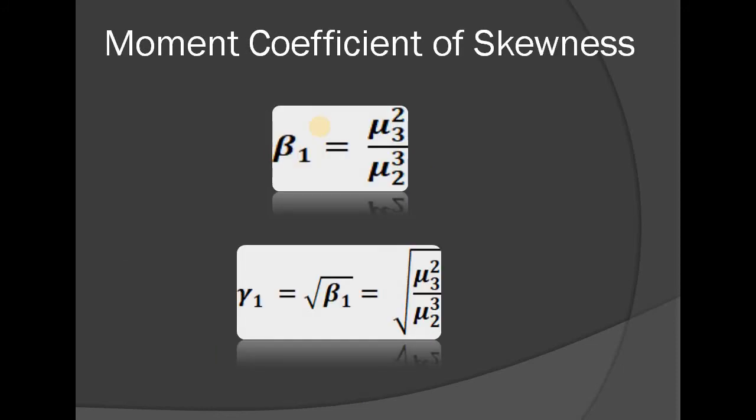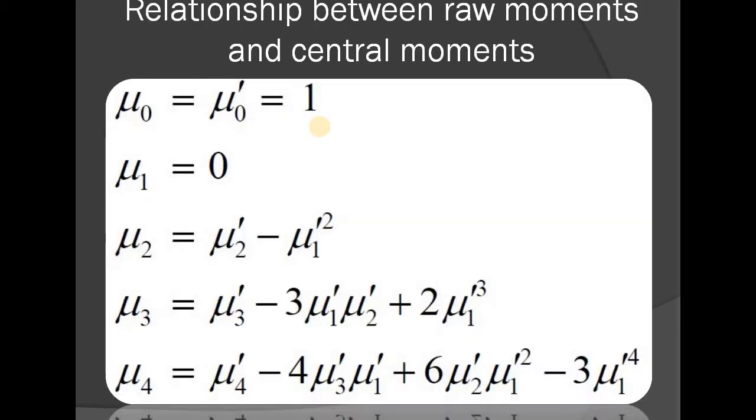The moment coefficient of skewness: beta_1 = mu_3 squared divided by mu_2 cubed, and gamma_1 = root of beta_1, which means the square root of (mu_3 squared divided by mu_2 cubed). This is the moment coefficient of skewness.